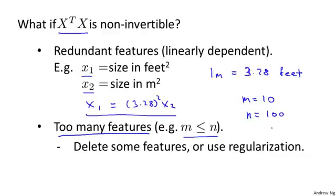Then you're trying to fit a parameter vector theta, which is n plus one dimensional. So it's 101 dimensional, you're trying to fit 101 parameters from just 10 training examples. And this turns out to sometimes work, but to not always be a good idea, because as we'll see later, you might not have enough data if you have only 10 examples to fit 100 or 101 parameters.